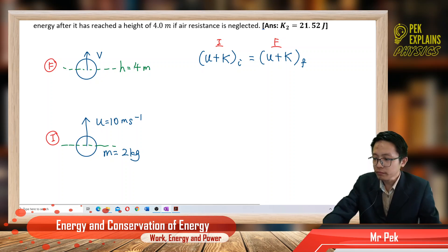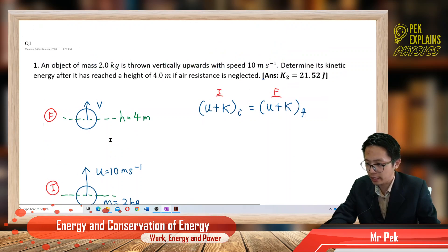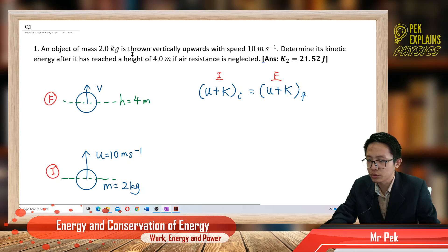So, initially, what kind of energy it has? It says it's thrown vertically upwards with certain speed. Let us write down. This is the mass, this is the initial speed, and it has certain height.